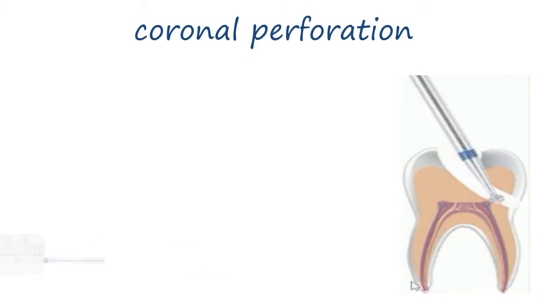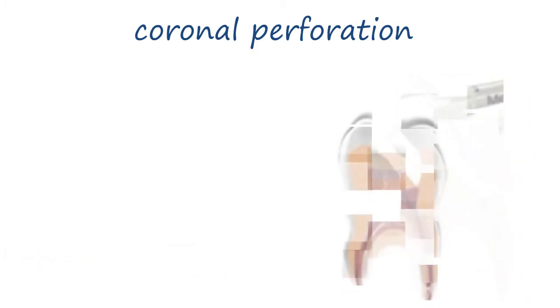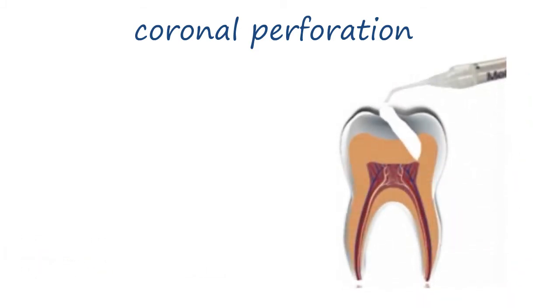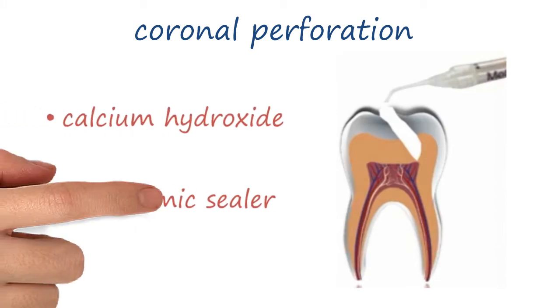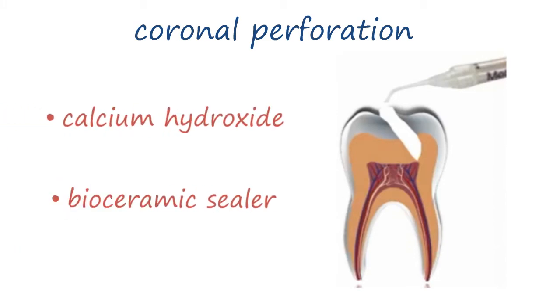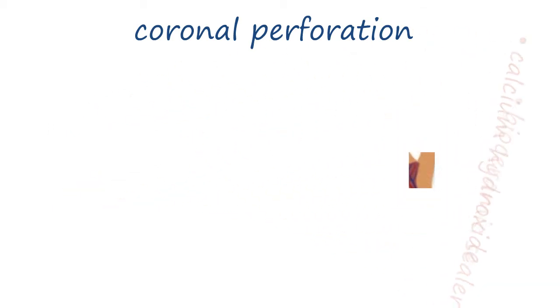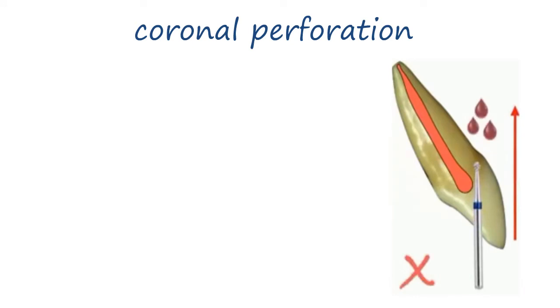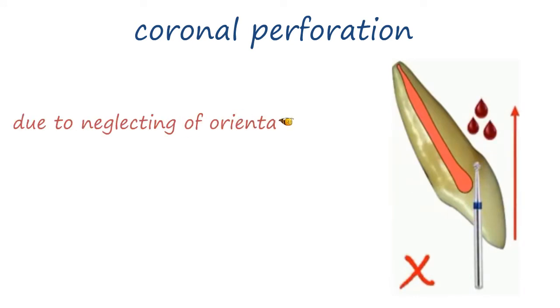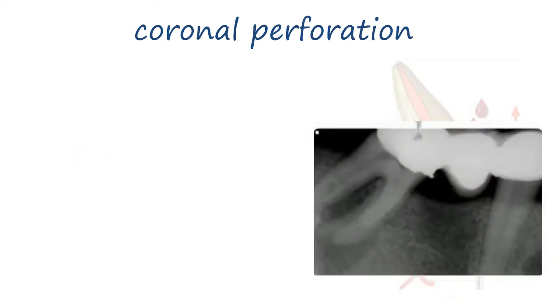In case of doubt in the burr direction, you can always stop. Inject radiopaque paste inside the cavity, like calcium hydroxide or bioceramic sealer, then take a radiograph to confirm you're going the right direction toward the pulp chamber. Coronal perforation mostly happens in upper anterior teeth due to neglecting orientation or inclination of the tooth, and may also happen in access opening of tilted teeth.